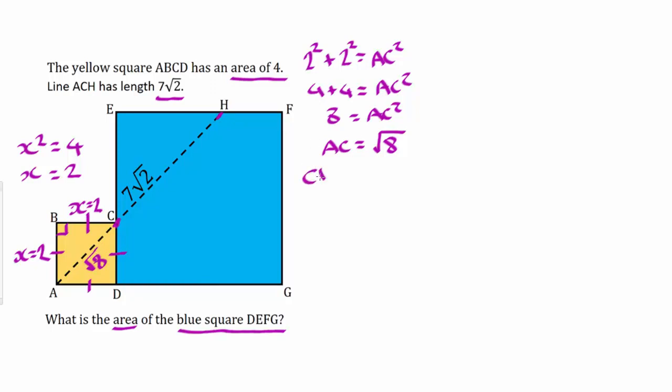So CH equals AH minus AC. So CH equals 7 root 2 minus root 8. But it's very difficult to take root 8 away from 7 root 2, so we can simplify root 8.